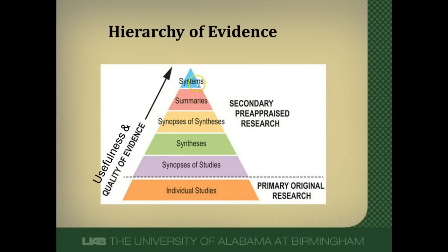Just quickly to run through these: systems are clinical decision support systems that are usually integrated with electronic medical records. Summaries are evidence-based electronic textbooks like Dynamed and Up-to-Date and also evidence-based clinical practice guidelines. Below that are syntheses, which are systematic reviews. And finally, below that are synopses of studies — a synopsis is just a structured abstract of a clinically and methodologically sound article like those found in ACP Journal Club.